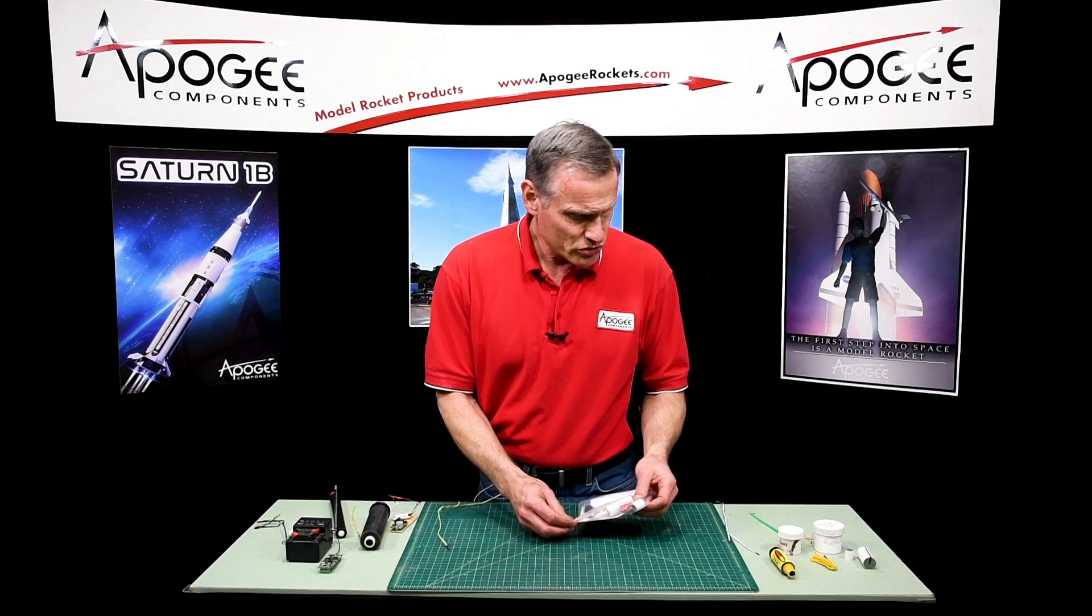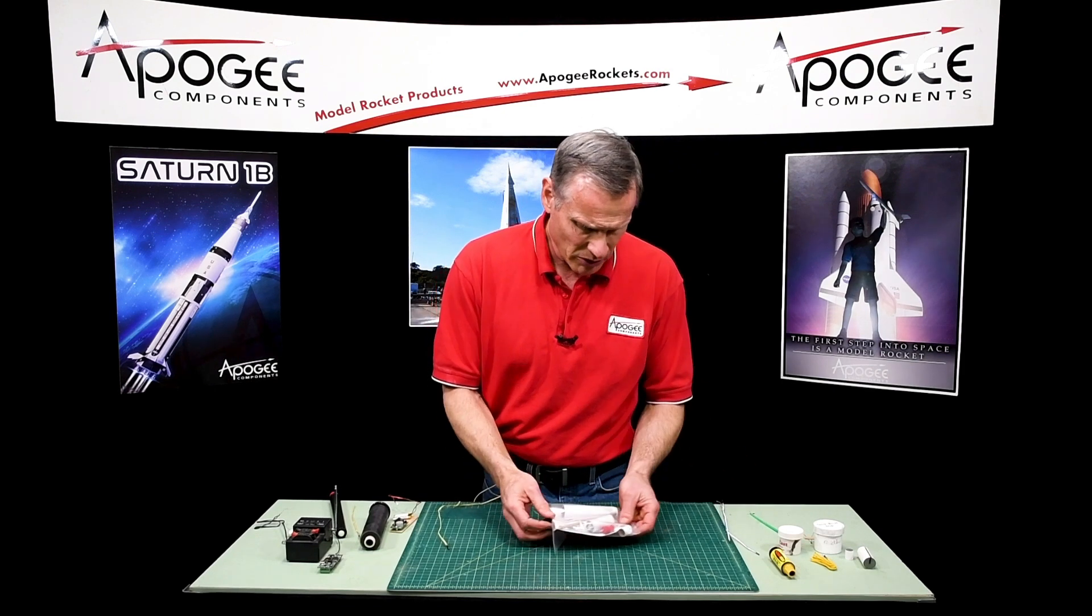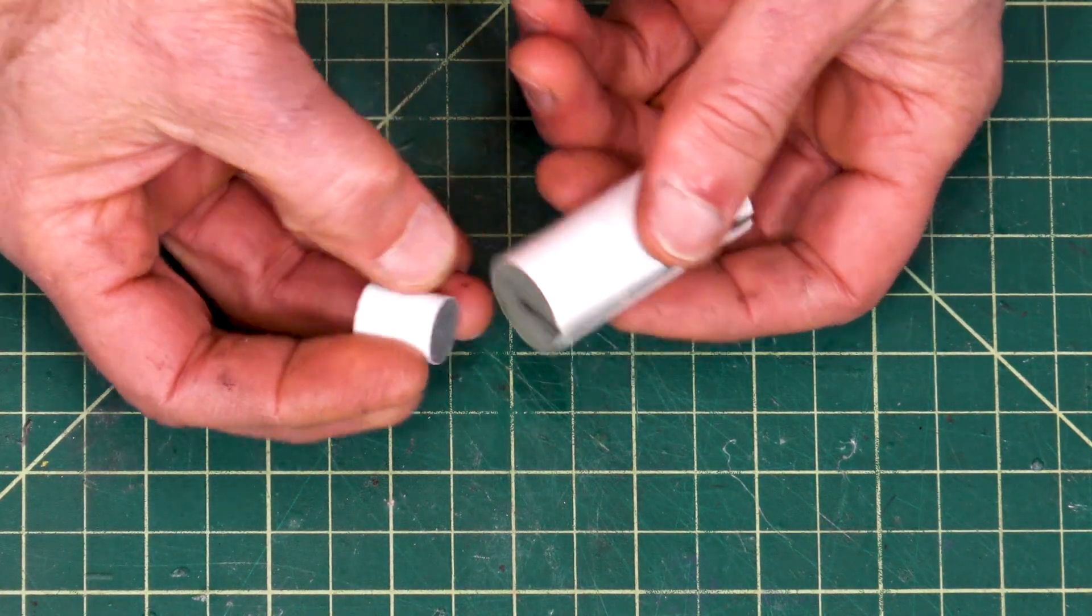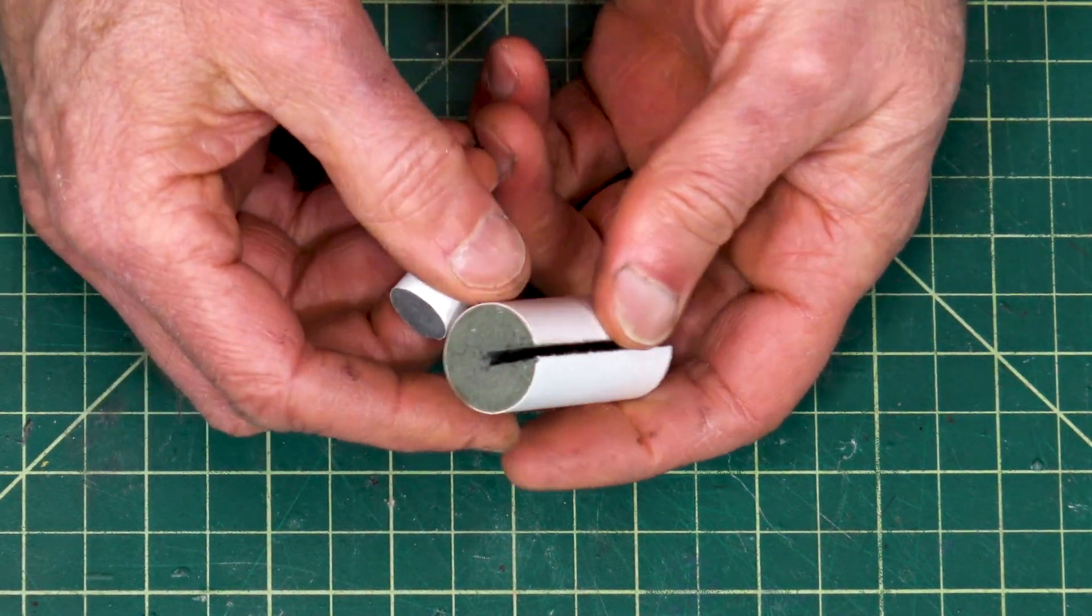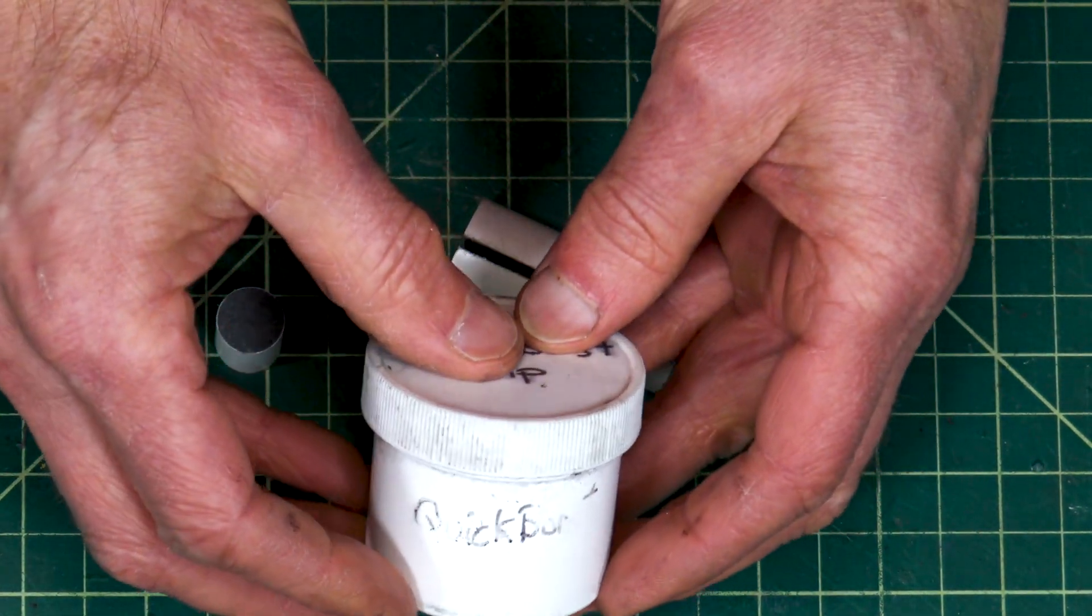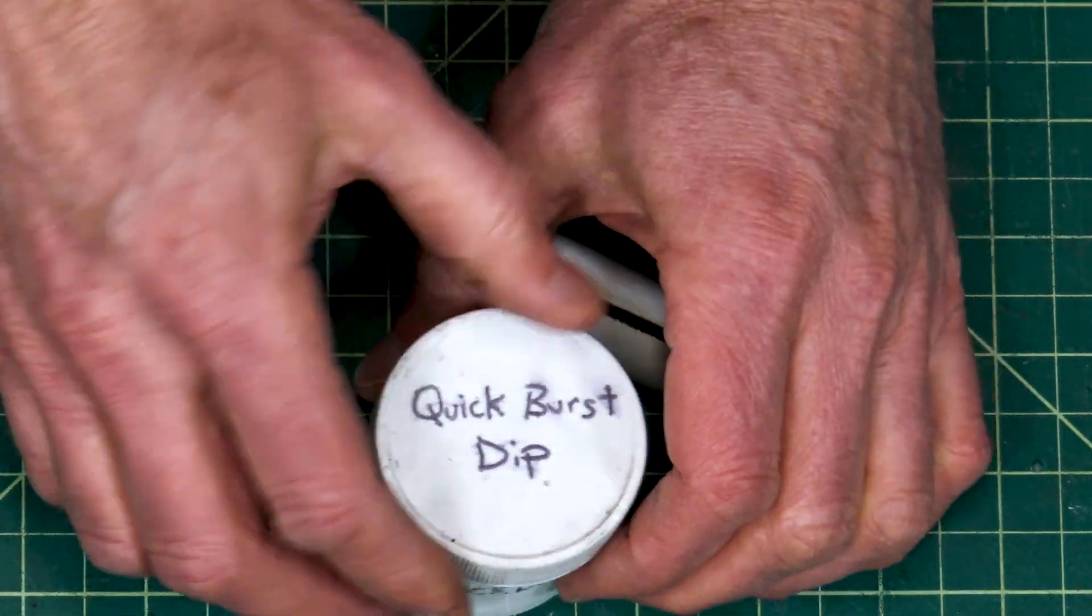So here's the trick I'll show you. So here's an Aerotech reload kit and it will look like that. Here's a delay and here's one of the propellant chunks. So what we sell is the quick burst quick dip igniter.